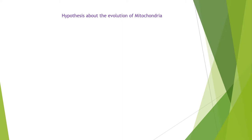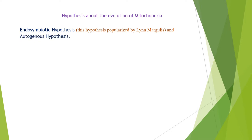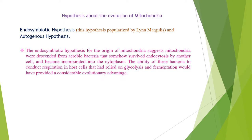There are two hypotheses about the origin of mitochondria: the endosymbiotic hypothesis, popularized by Lynn Margulis, and the autogenous hypothesis. The endosymbiotic hypothesis suggests that mitochondria were descended from aerobic bacteria that somehow survived endocytosis by another cell and became incorporated into the cytoplasm. The ability of these bacteria to conduct respiration in host cells that had relied on glycolysis and fermentation would have provided a considerable evolutionary advantage.